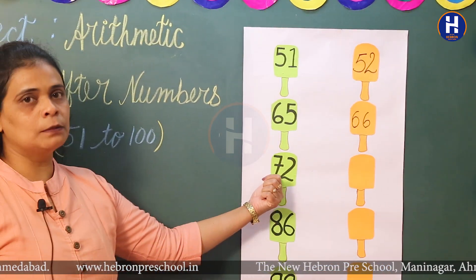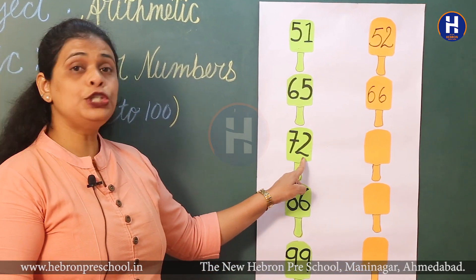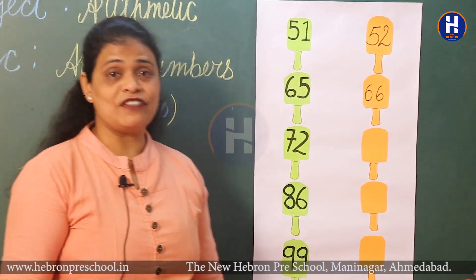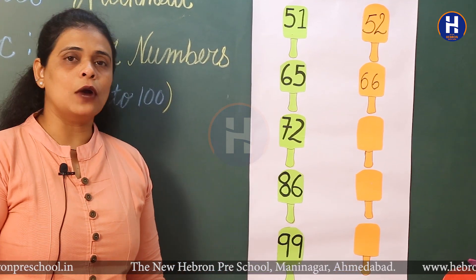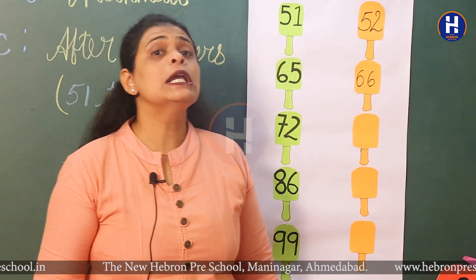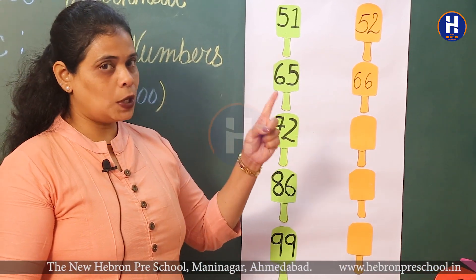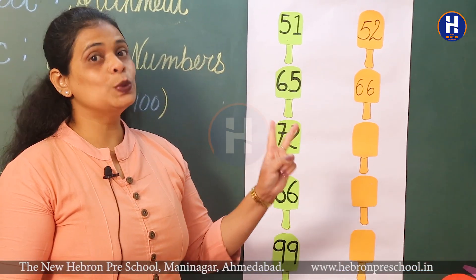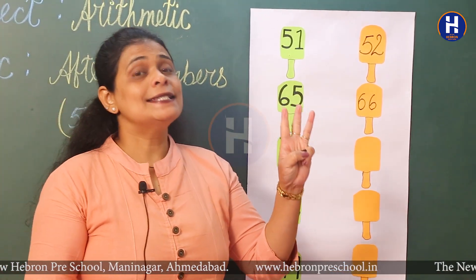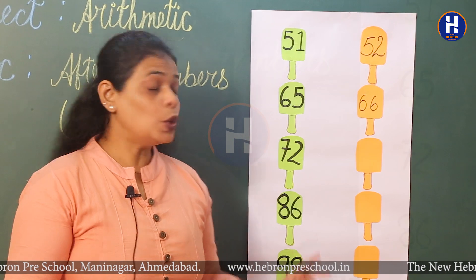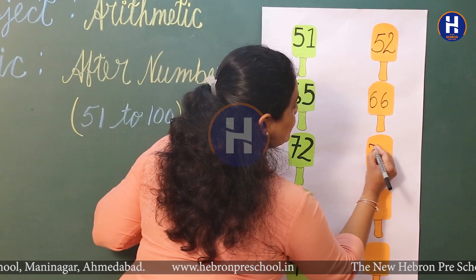Now next number. Which number is this? 72. So let's start forward counting from number 71: 71, 72, 73. So what comes after 72? 73.